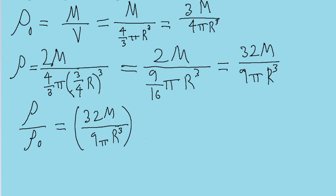And if we divide that by ρ₀, then that's the same thing as multiplying the reciprocal of ρ₀. It's multiplied by 4π R³ divided by 3M.